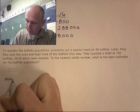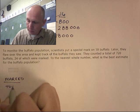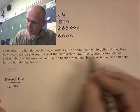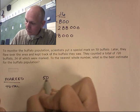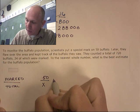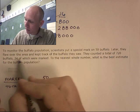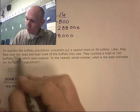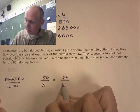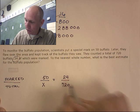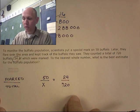So, let's go with marked over total again. So, they marked 50 out of a population that's unknown. And they came back later and they saw 24 that were marked out of a population of 720 that they saw. So, marked over total is marked over total.